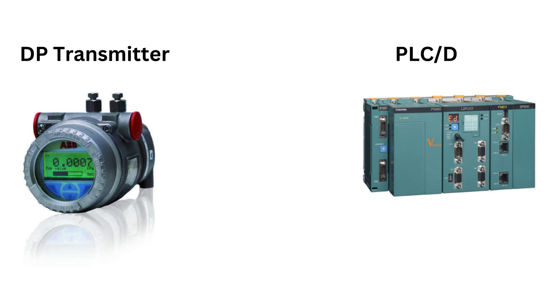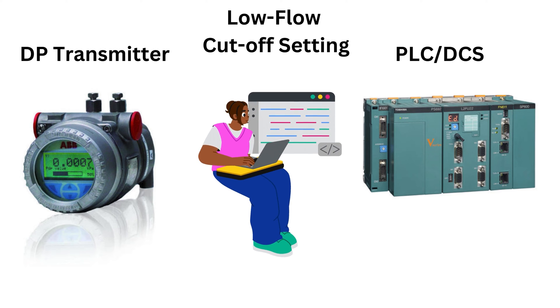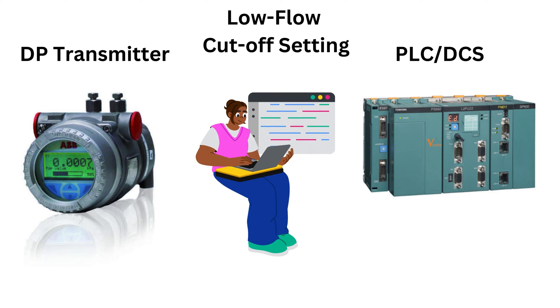If the square rooting is done by the PLC or DCS, then the DP transmitter has a linear output and the low flow cutoff should be programmed in the PLC or DCS.